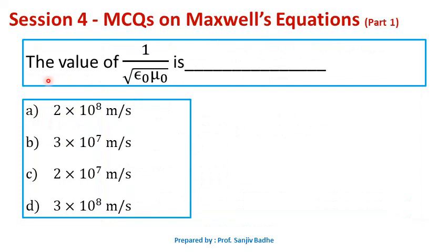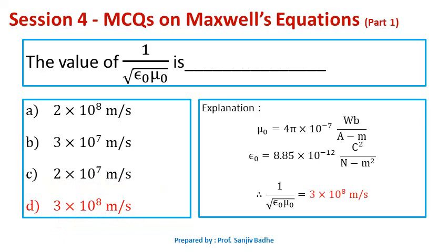This is the last question: the value of 1 upon square root of epsilon naught mu naught is — 2×10⁸ m/s, 3×10⁷ m/s, 2×10⁷ m/s, or 3×10⁸ m/s? While working with Maxwell's equations in free space, mu naught is the permeability of free space equal to 4π×10⁻⁷ Weber per ampere meter, and epsilon naught is the permittivity of free space equal to 8.85×10⁻¹² Coulomb squared per Newton meter squared. Calculating 1/√(ε₀μ₀) gives 3×10⁸ m/s, which is the velocity of light. So option D is correct.